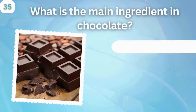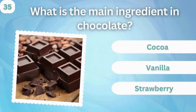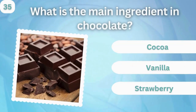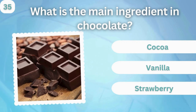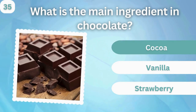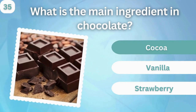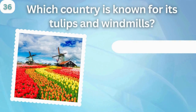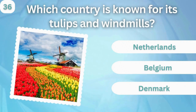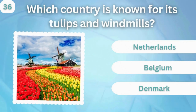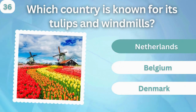What is the main ingredient in chocolate? Cocoa, vanilla, or strawberry? Cocoa. Which country is known for its tulips and windmills? Netherlands, Belgium, or Denmark? Netherlands.